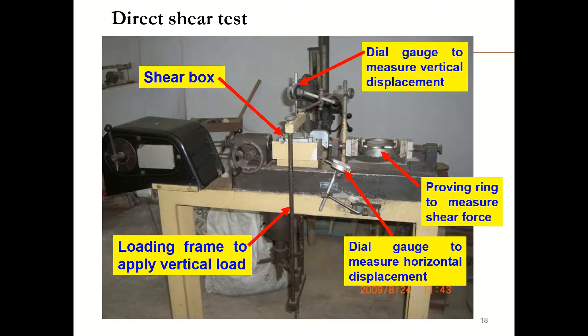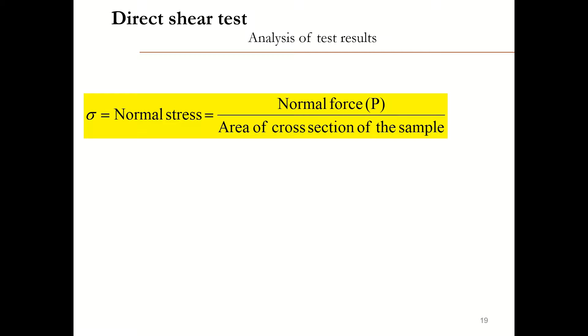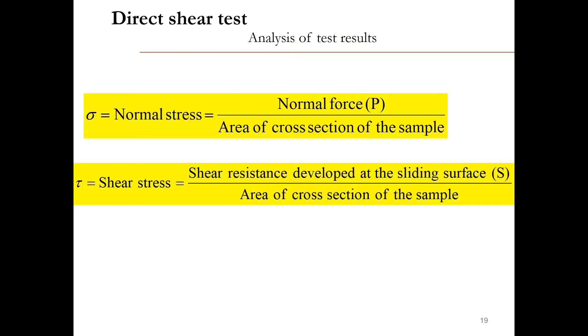From a direct shear test, we will get data for shear force and horizontal displacement. We need to calculate the stress from the force by dividing it by the cross-sectional area. Normal stress equals the normal force divided by the cross-sectional area of the sample. Shear stress equals the shear resistance developed at the sliding surface divided by the cross-sectional area of the soil sample.